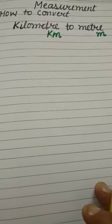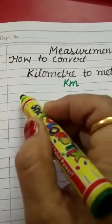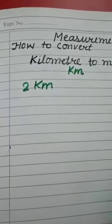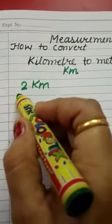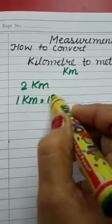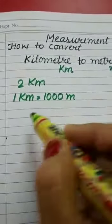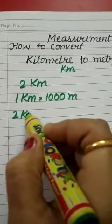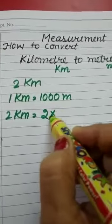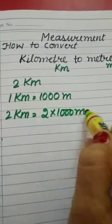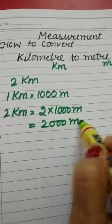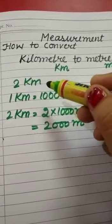Now let's learn how to convert kilometers into meters. I am taking an example of two kilometers — we have to convert this into meters. As we know, one kilometer equals one thousand meters. So for two kilometers, we multiply two by one thousand meters and we get two thousand meters. That is the answer: two kilometers equals two thousand meters.